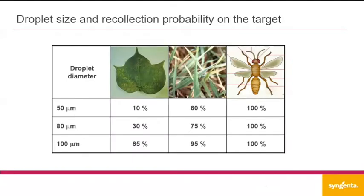Droplet size and collection probability on the target: the larger the collector, the more difficult it is for droplets to land. A 50-micron droplet will hit only 10% of a soy leaf; from 80 microns, only 30%; 100 microns, only 65%. We're talking about the probability in a lab setting of reaching the leaf — not including evaporation or drift. The smaller the leaf, the better small droplets can reach the target. When you look at insects, they collect spray liquid by flying, so droplet size matters less in that case.